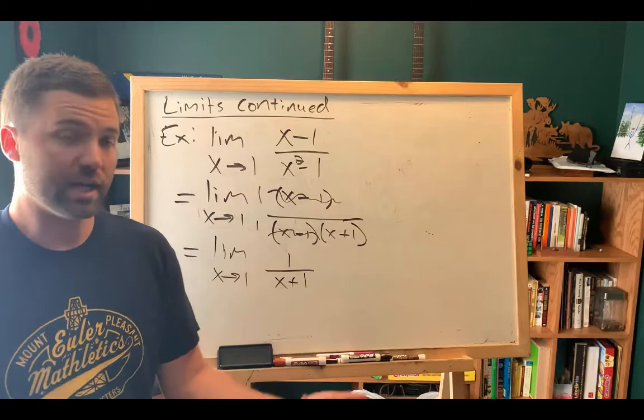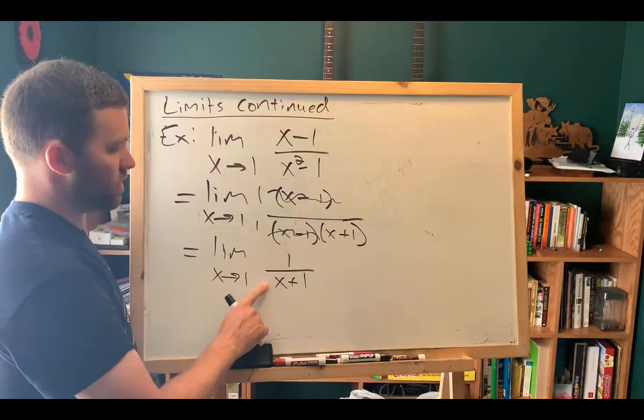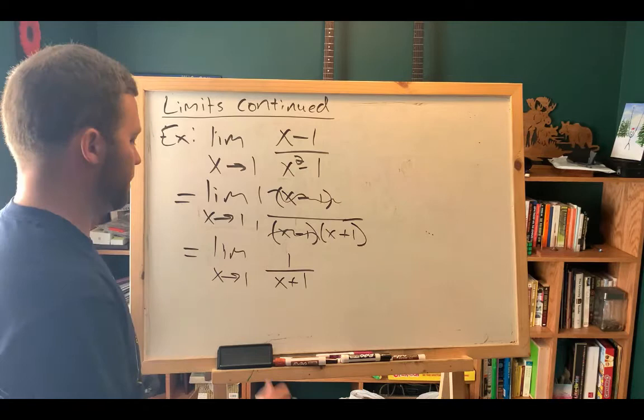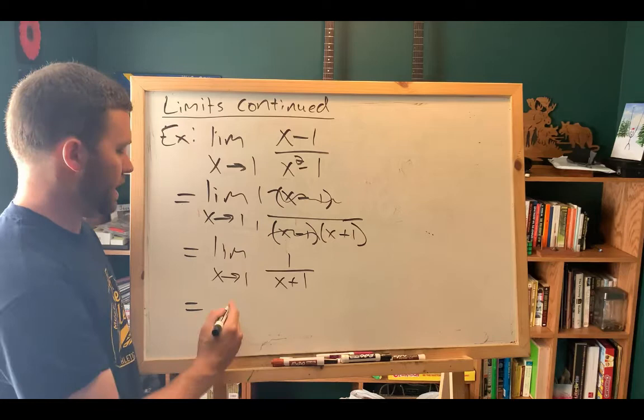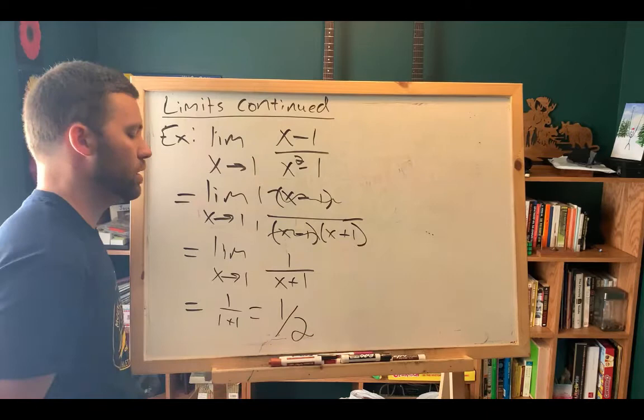Now, after each step of algebraic manipulation, you should check: Can I use direct substitution at this point? So we'll check right now. And we see that if I use direct substitution, I'll get one divided by one plus one, which is just one over two. So now that I'm evaluating the limit, I can drop the limit notation. Because I'm actually evaluating it now. I'm plugging in one, and I'm getting one over one plus one, which is one over two. So that's what my limit is.